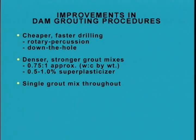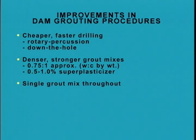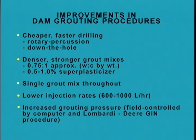Lower injection rates, as low as 2.5 to a little over 6 gallons per minute — that is 600 to 1,000 liters per hour — are sometimes specified to give uniform grouting to the rock. Pressures are often allowed that are higher nowadays than those formerly used, and they are controlled in many recent dams together with the volume of grout by the Lombardi GIN method, G-I-N meaning Grouting Intensity Number. The following brief discussion is divided into consolidation grouting and curtain grouting.